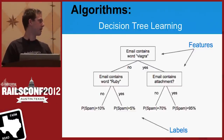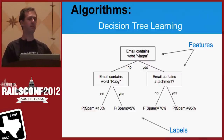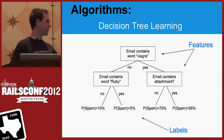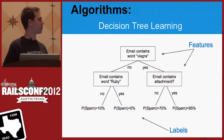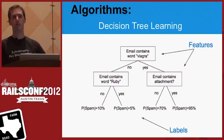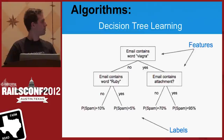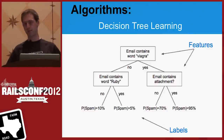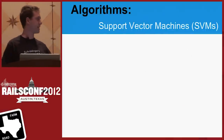Given a new email, we say: does it have the word Viagra? If it does and has an attachment, the probability it's spam is 95%. Without the attachment, it's 70%. Without Viagra but with the word Ruby, it's 5%, or without Ruby it's 10%, which is our baseline probability in this corpus. The corpus is your training set — your database of knowledge. Decision trees can be learned and there are algorithms for doing so, and the library Ryan's going to introduce has that technique built in.